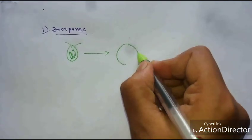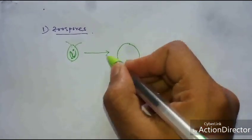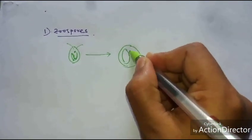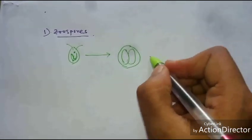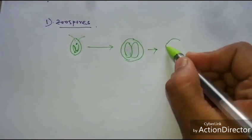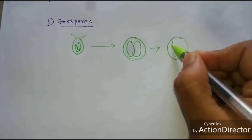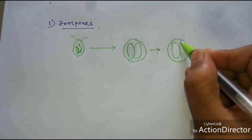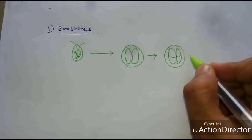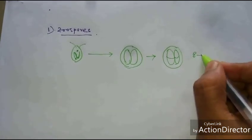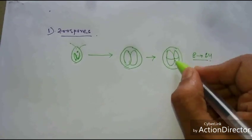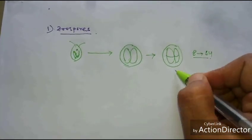It liberates its flagella and its protoplast divides longitudinally and also transversely, producing 8 to 64 protoplasts.